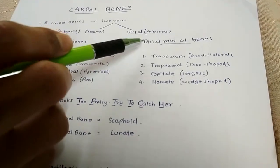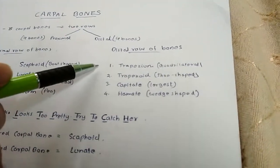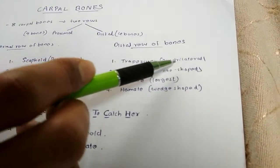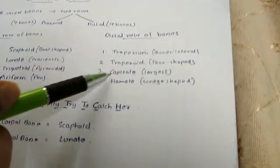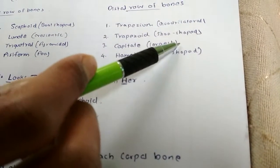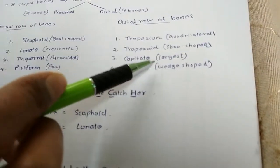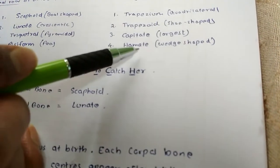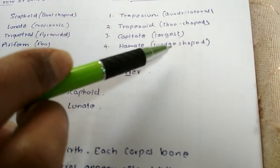Now the distal row of bones again from lateral to medial side are trapezium that is quadrilateral shape, trapezoid that is shoe shaped, capitate which is the largest carpal bone, and the last is hamate that is wedge shaped.